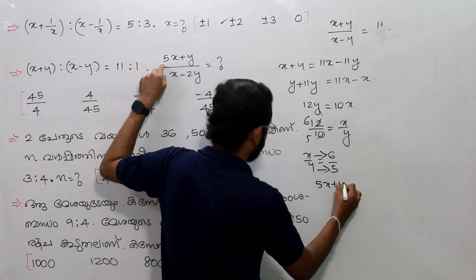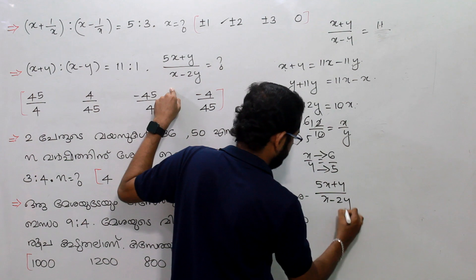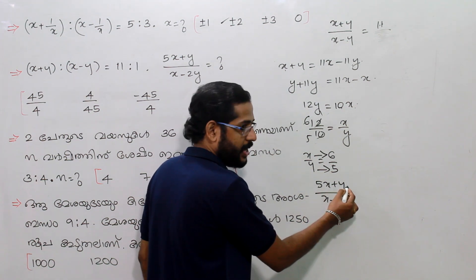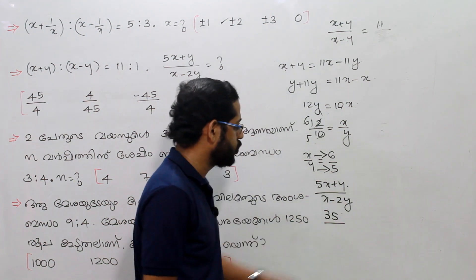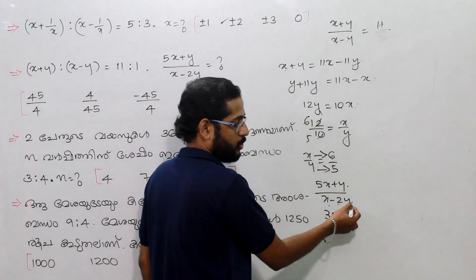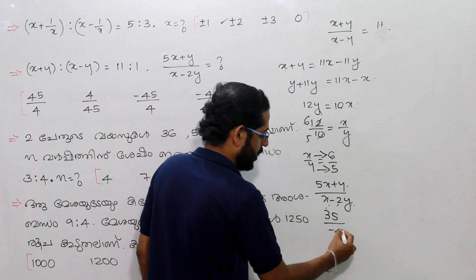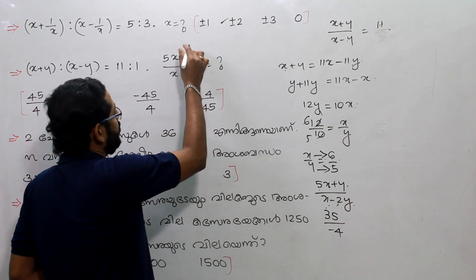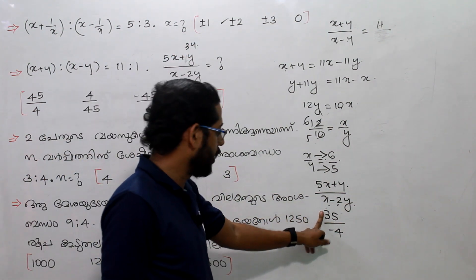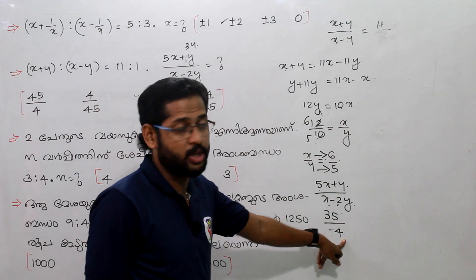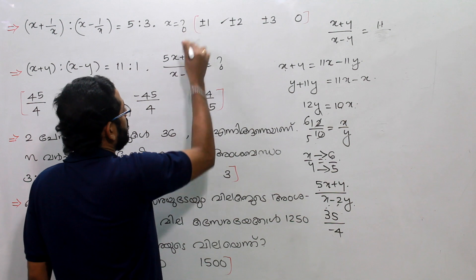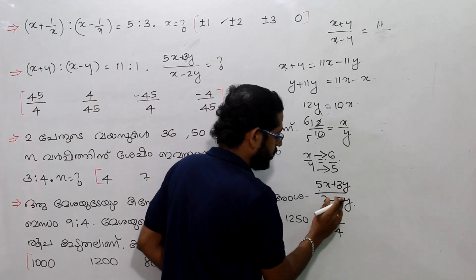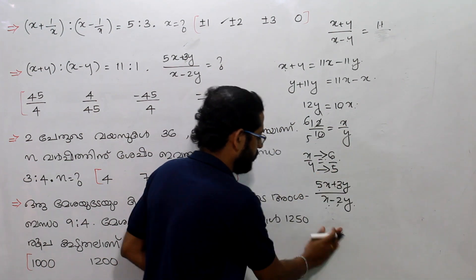The next question is 5x plus y by x minus 2y. We have x by y equal to 6 by 5, so x equals 6r and y equals 5r. By x minus 2y: x minus 2y equals 6r minus 10r equals minus 4r. We use the same method — the answer is 35 by minus 4.